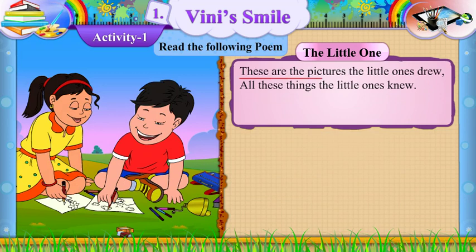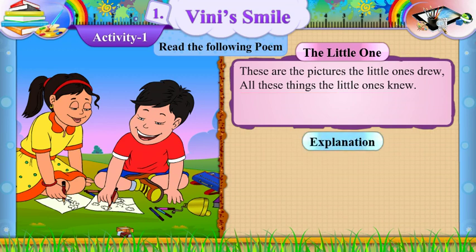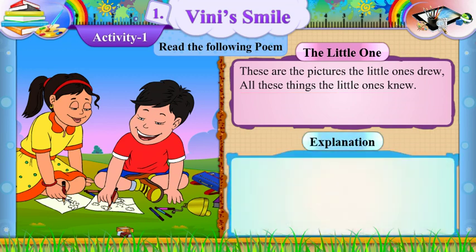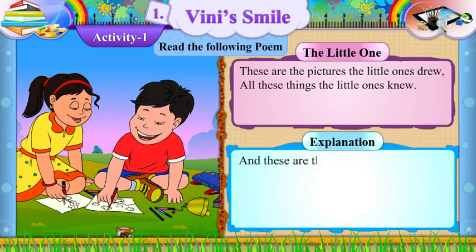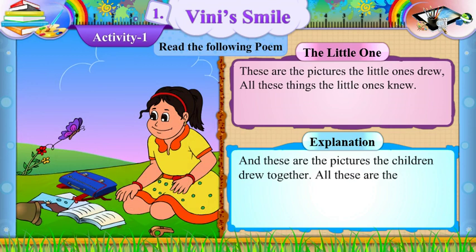These are the pictures the little ones drew. Explanation: And these are the pictures the children drew together. All these are the things the little children knew.